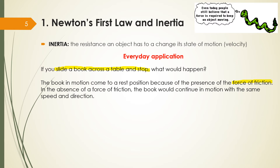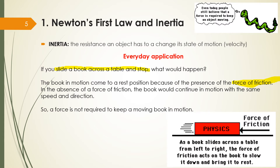Let's say you give the book some movement — the book is sliding over the table. If there is no force of friction at all, the book would continue moving. So what stops the book? The force of friction. I need a force to stop that moving object. As a book slides across a table from left to right, the force of friction acts on the book to slow it down and bring it to rest — acting against that movement.